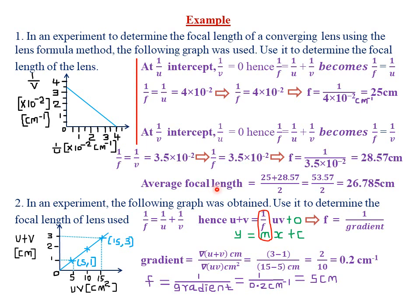The average focal length is (25 cm + 28.57 cm) ÷ 2. So 25 plus 28.57 gives 53.57, and divided by 2 gives 26.785 centimeters as the average focal length.